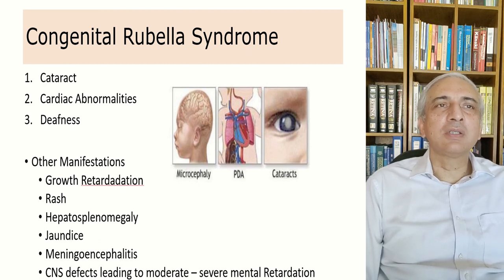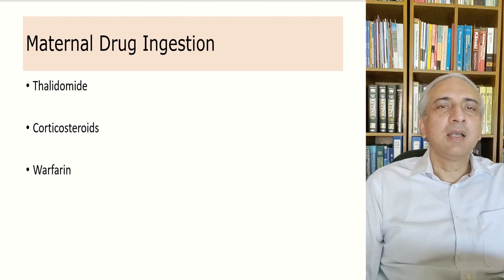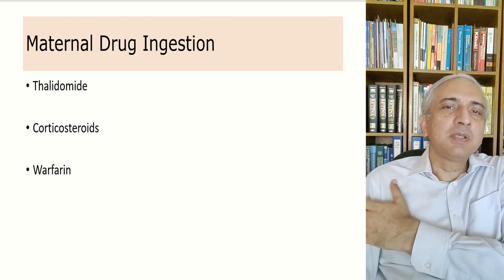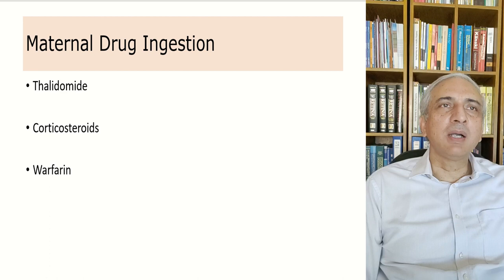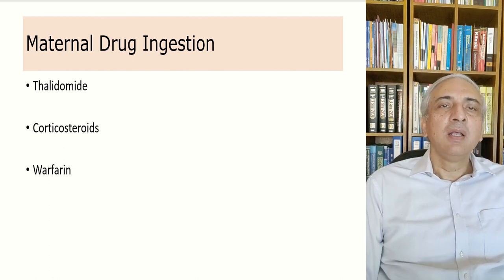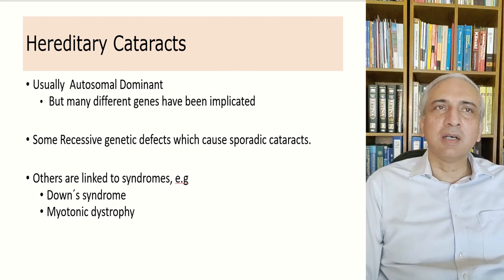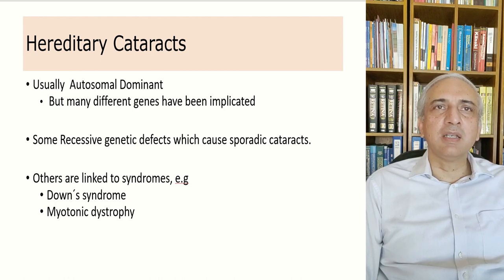Maternal drug exposure causing cataract includes thalidomide — which caused children to be born with absent limbs — corticosteroid intake by the mother, and warfarin. Hereditary cataracts account for one-third of congenital cataracts; they are usually autosomal dominant, but different genes have been implicated. Some recessive genetic defects cause sporadic cataracts; others are linked to syndromes such as trisomy 21 (Down syndrome) or myotonic dystrophy.